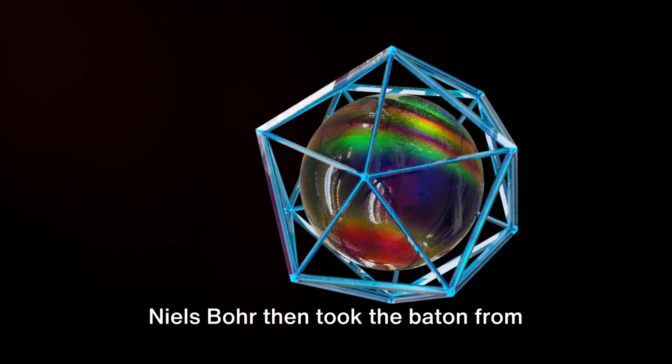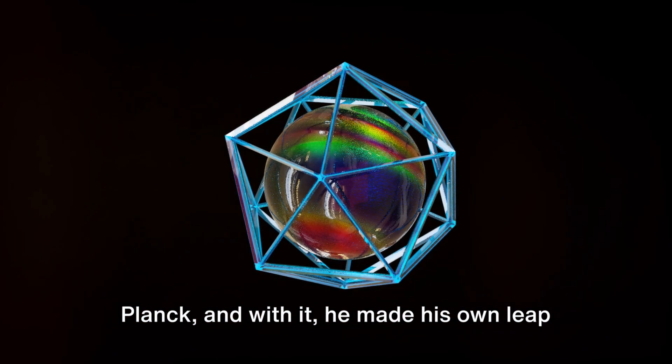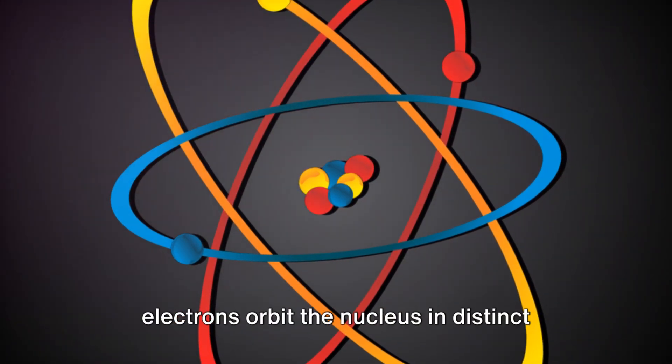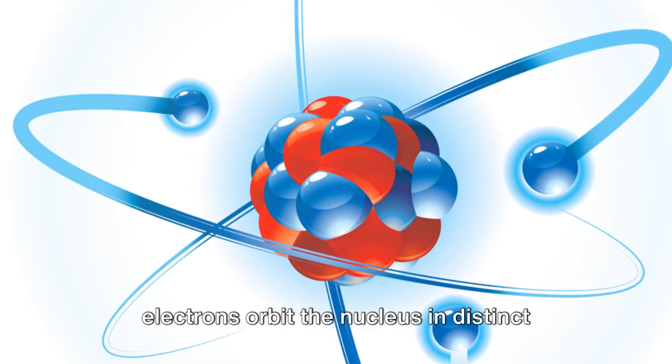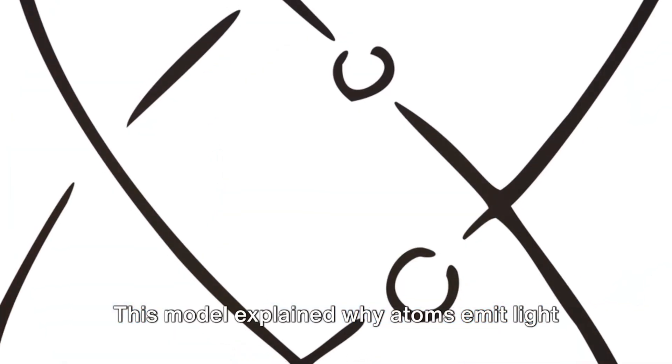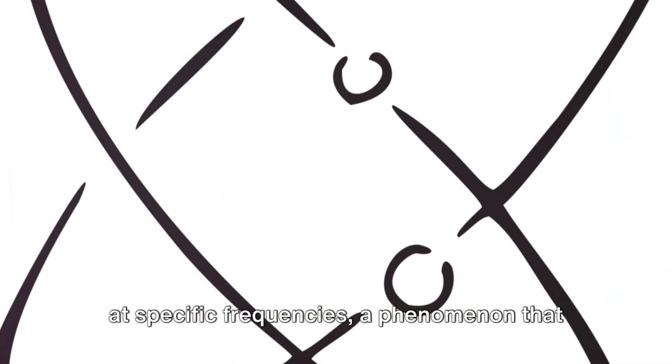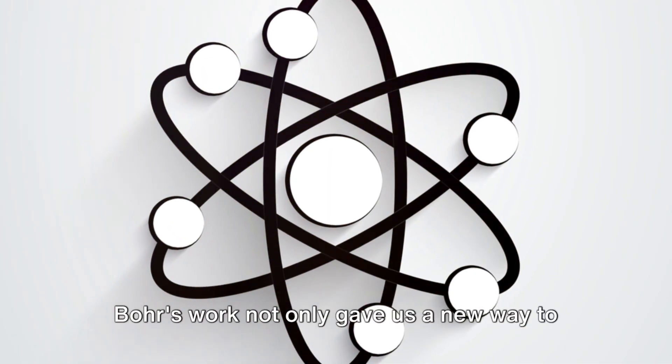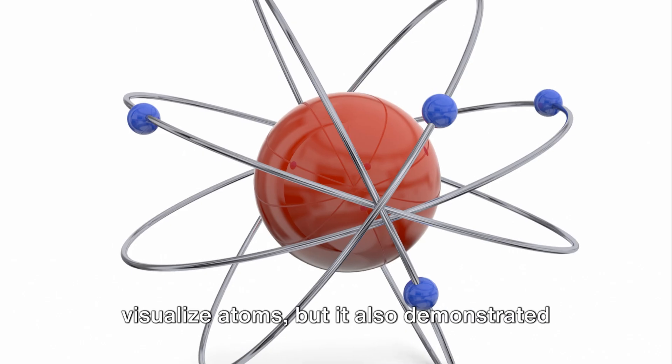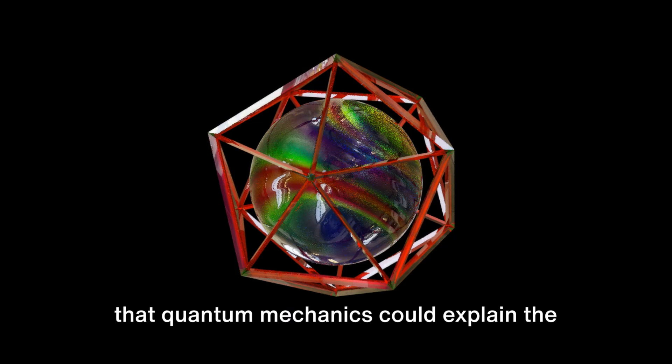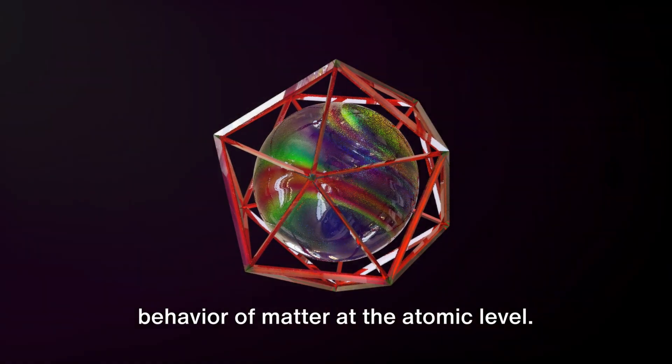Niels Bohr then took the baton from Planck, and with it, he made his own leap into the quantum realm. Bohr proposed a model of the atom where electrons orbit the nucleus in distinct energy levels. This model explained why atoms emit light at specific frequencies, a phenomenon that had baffled scientists for decades. Bohr's work not only gave us a new way to visualize atoms, but it also demonstrated that quantum mechanics could explain the behavior of matter at the atomic level.